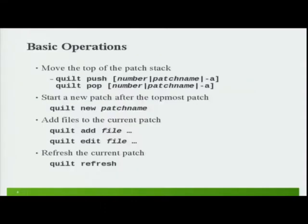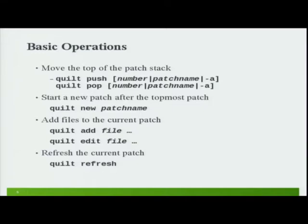The basic operations you can do with Quilt are moving the top of the stack with 'quilt push' and 'quilt pop'. With different options you can move by more than one patch at a time, go directly to the bottom or top, or go to a specific patch. The 'new' command lets you create a new patch at the current point in the stack. Once you've created a patch, you add files to it — letting Quilt know which specific files you're going to modify, so it can make backups.